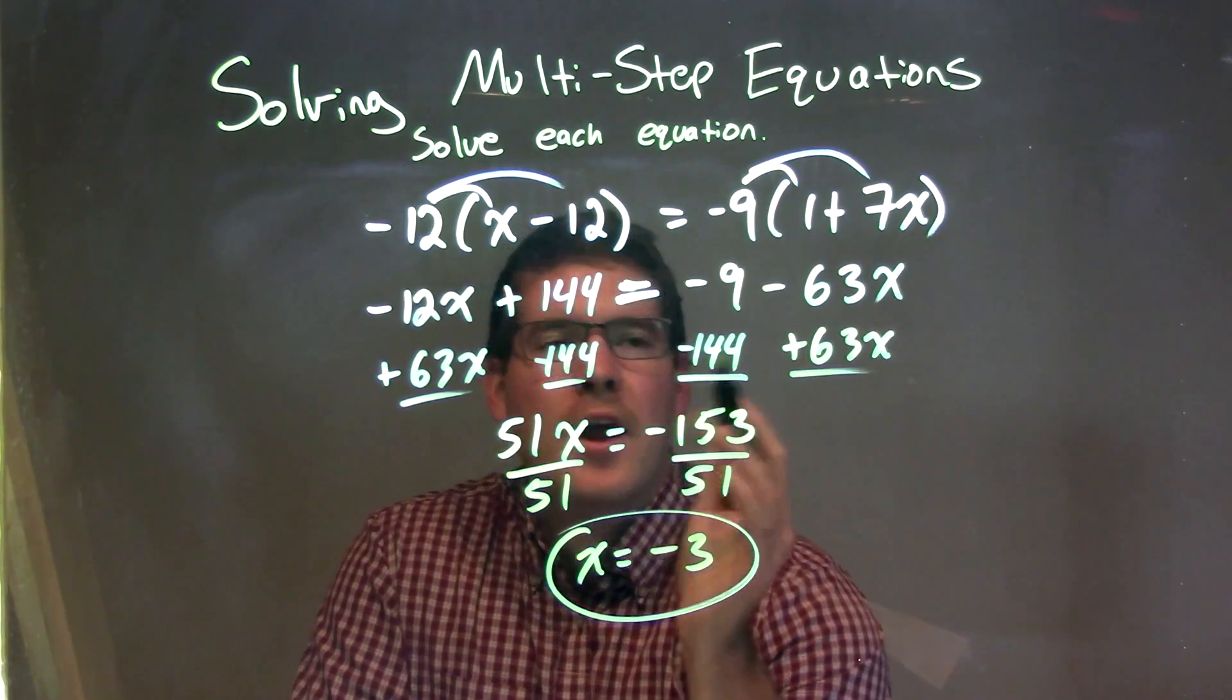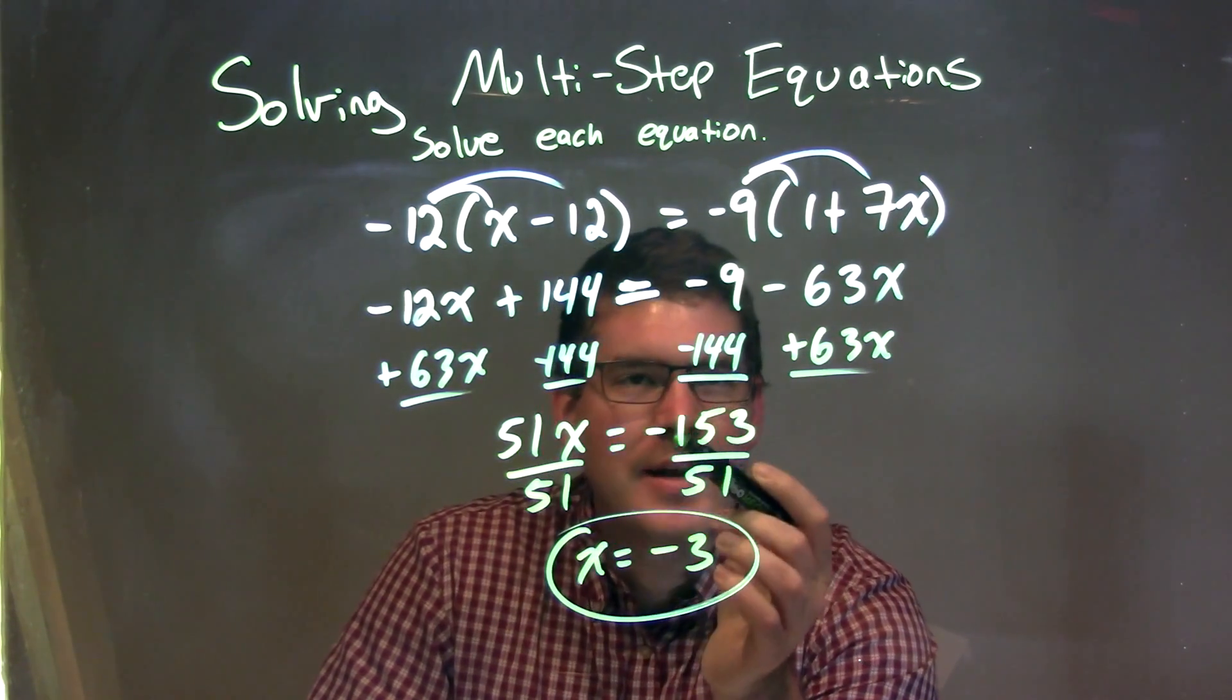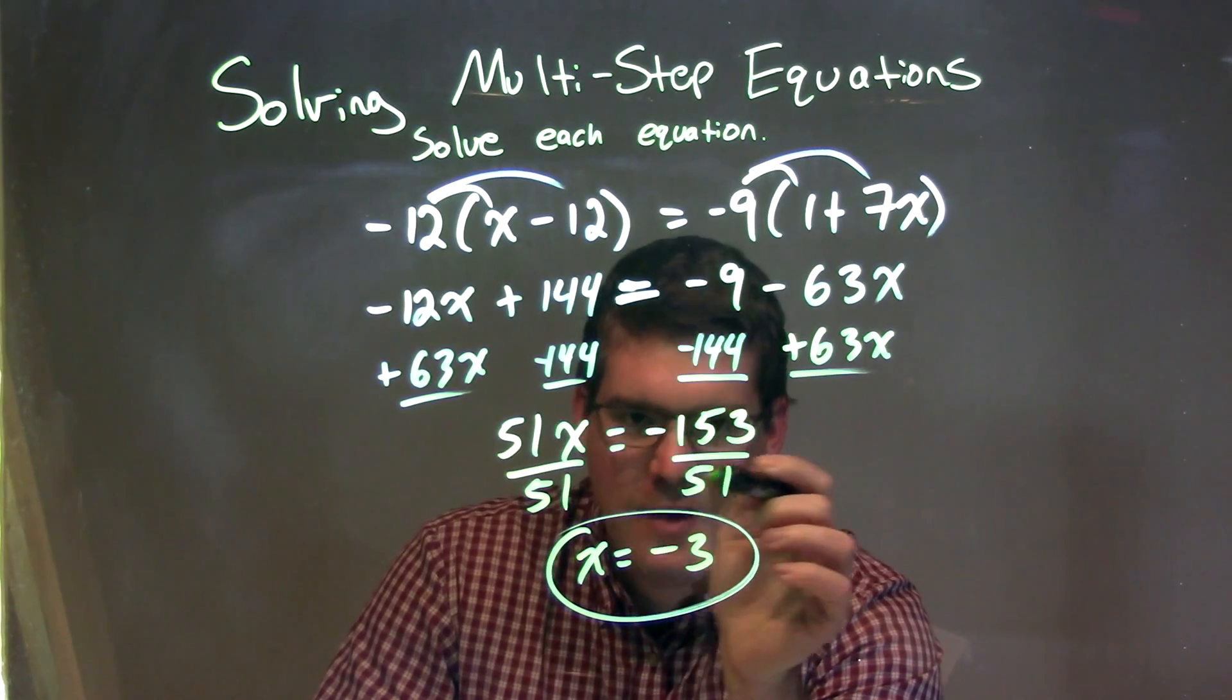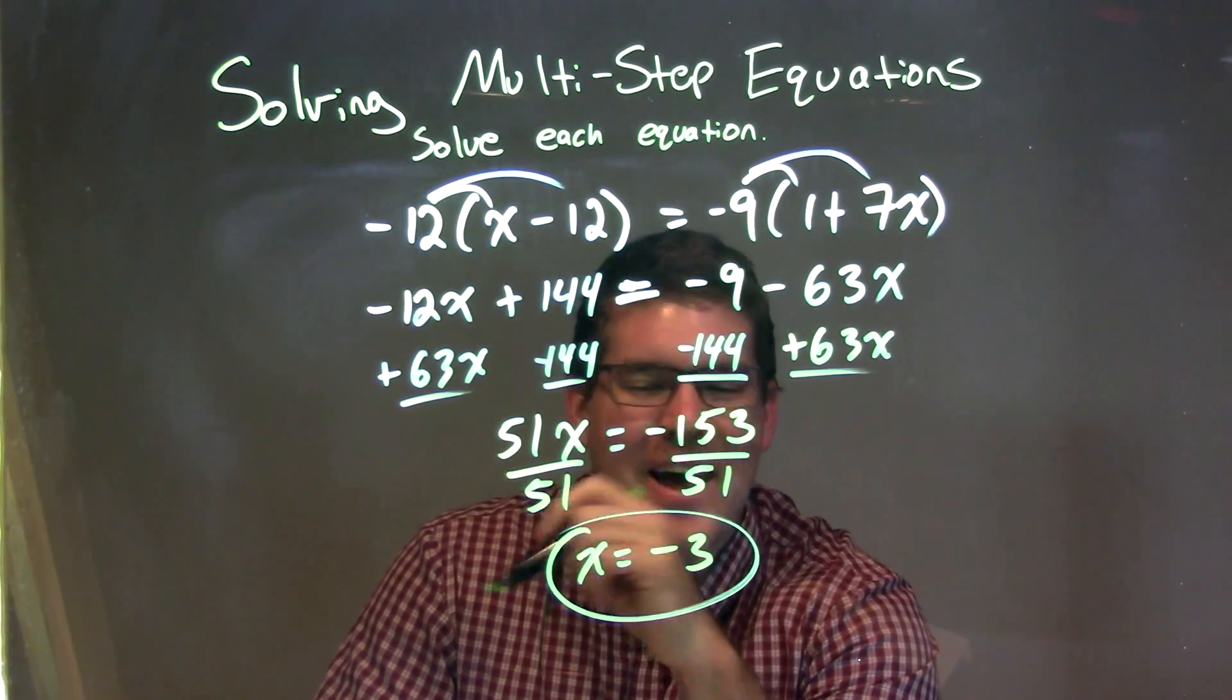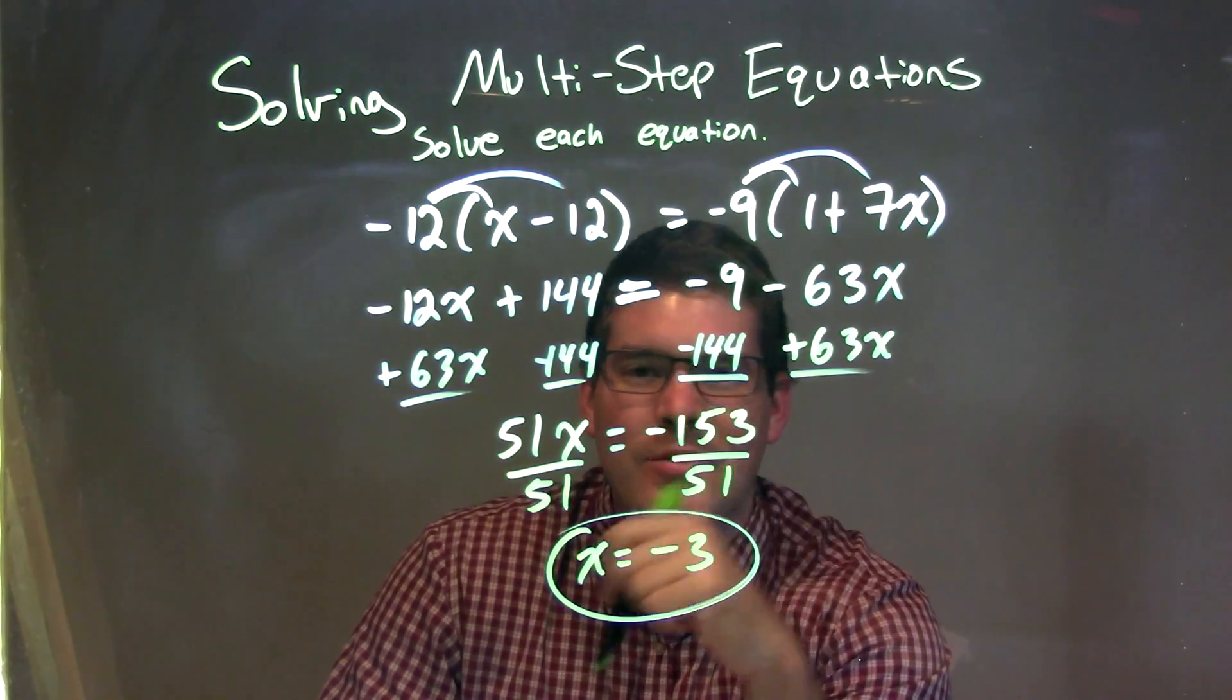I then brought all my variables to the left and numbers to the right. That gave me 51x equals negative 153. I divided by 51 on both sides, giving me x by itself, and that's going to be equal to negative 3, and that is our final answer.